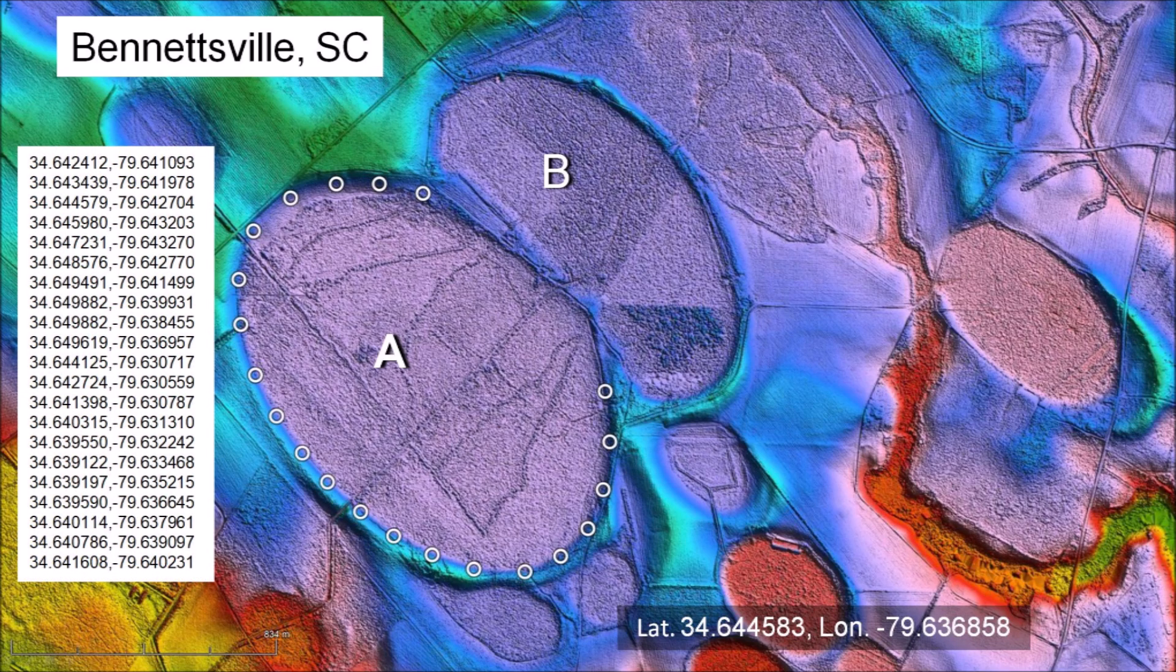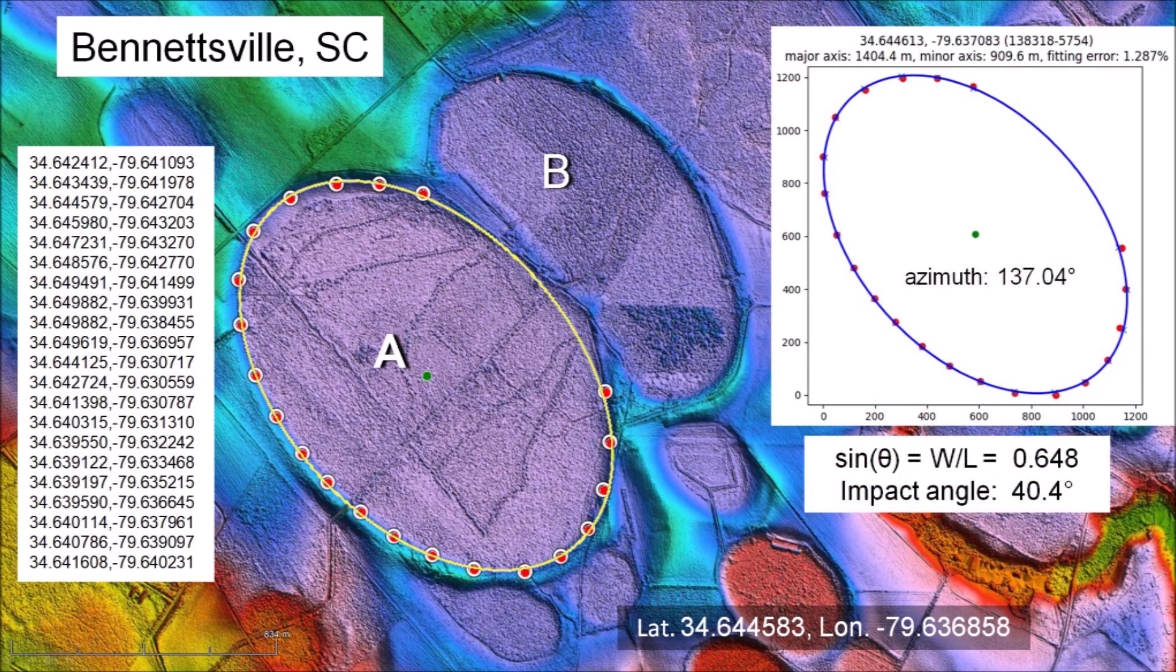Using Google Earth, we select points along the perimeter of a bay, but we avoid the portion that is deformed by the overlap. The sample points are at the margin where the colorized topography indicates a change in elevation. The Python program provides the width and the length of the ellipse. The width-to-length ratio of basin A is 0.648, which corresponds to an impact angle of 40.4 degrees.